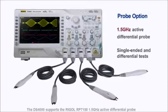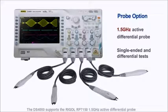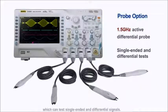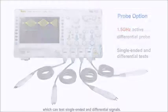The DS4000 supports the Rigol RP-7150 1.5 GHz active differential probe which can test single-ended and differential signals.